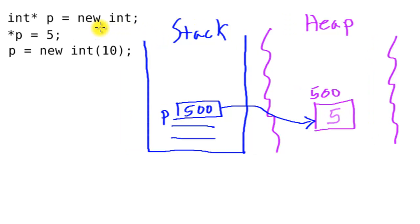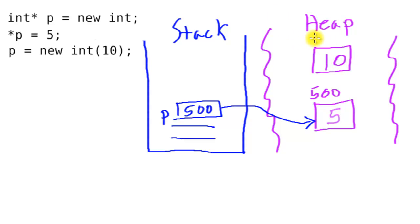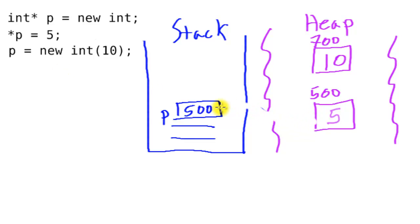Now let's create another int on the heap, this time initialized to the value 10. We can write `p = new int(10)`, which allocates a new int at, say, address 700. On the left-hand side, we've reassigned pointer p to point to this new int. The `new` operator returns address 700, so p is now updated to reference this new memory location.